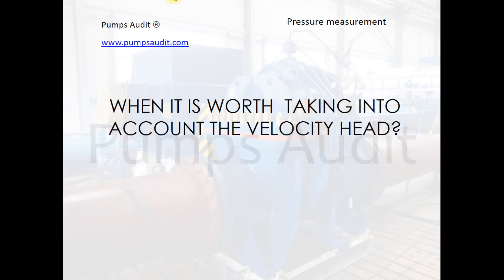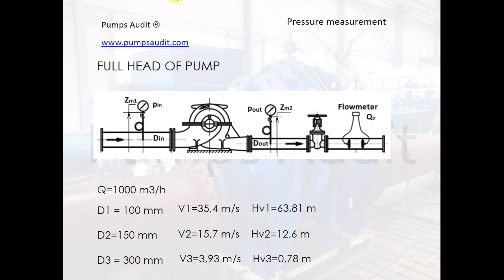One more important question: when is it worth taking into account the velocity head? To answer this, let's calculate the velocity heads for different pipe diameters — 100, 150, and 300 millimeters — for a flow of 1000 cubic meters per hour. For the 100 mm pipe, the velocity is 35 meters per second and the velocity head is almost 64 meters, which is quite a large value. For the 300 mm pipe, velocity is 4 meters per second and velocity head is 0.78 meters. It is clear that for pipes of 100 and 150 mm, the velocity head should be taken into account, while for the 300 mm pipe it can be neglected.